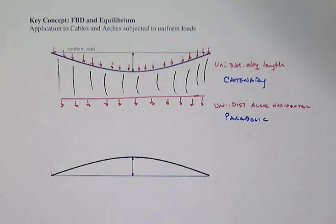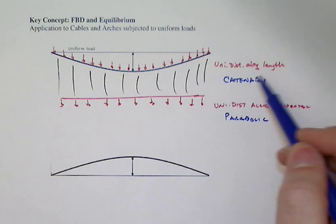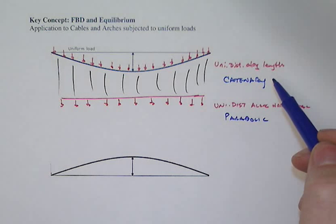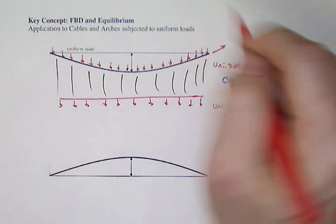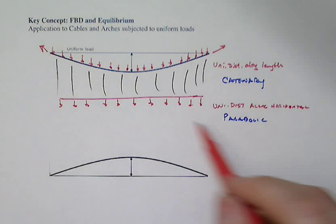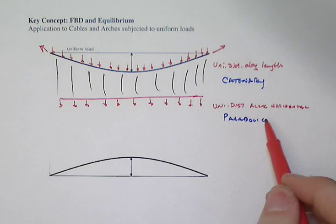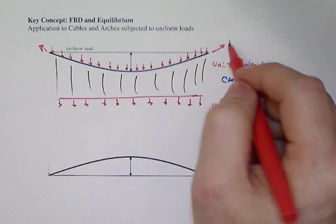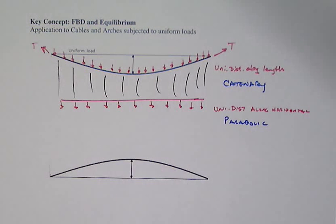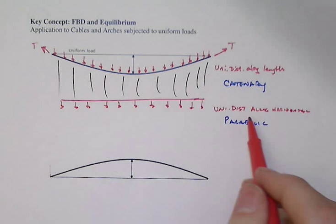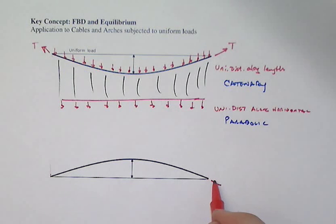When we have a uniformly distributed load along the length and end up with the catenary shape, we get pure tensile forces in the cable. When we go to the parabolic shape, we again end up with pure tensile forces in the cable. But here's an interesting application: if we freeze this shape and invert it, we create an arch. If that arch is parabolic and has a uniformly distributed load along the horizontal, we end up with pure compressive forces in that arch.